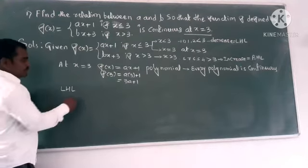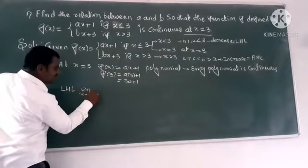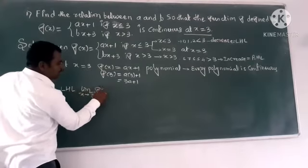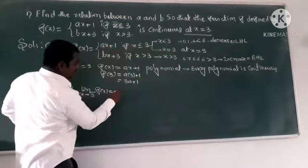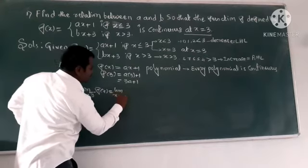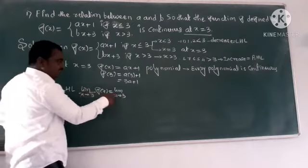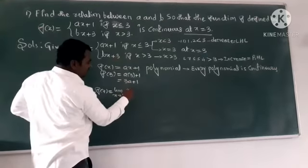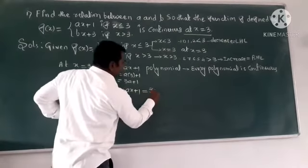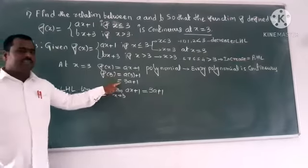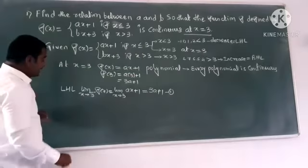Next, we find the Left Hand Limit (LHL): limit as x tends to 3 from the left. For the left-hand side, the applicable condition is ax plus 1. Substituting x equals 3 gives 3a plus 1. This is equation number one.